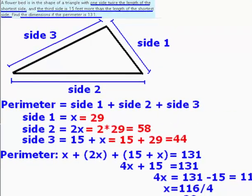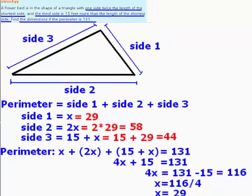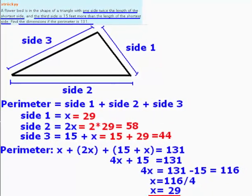So there you have it X tricky. The dimensions of the perimeters are 29, 58 and 44.